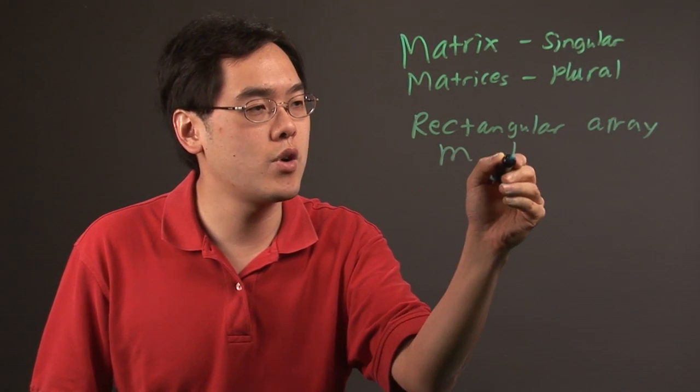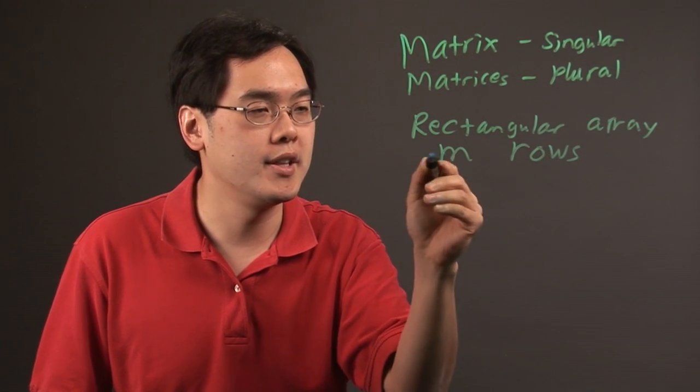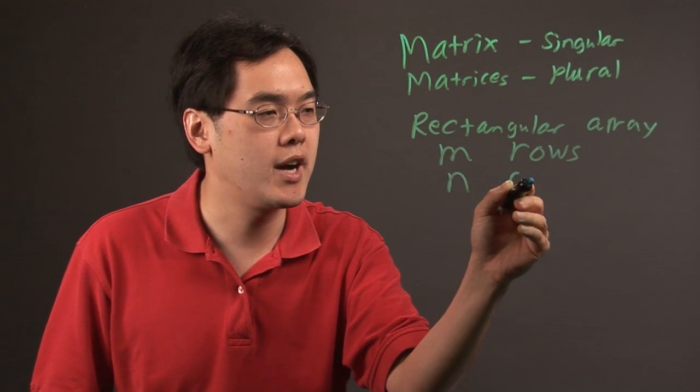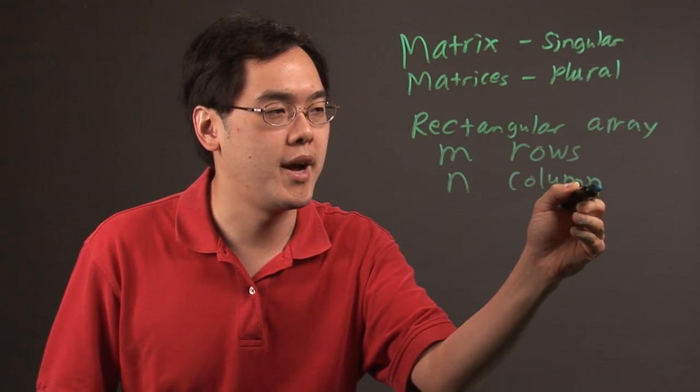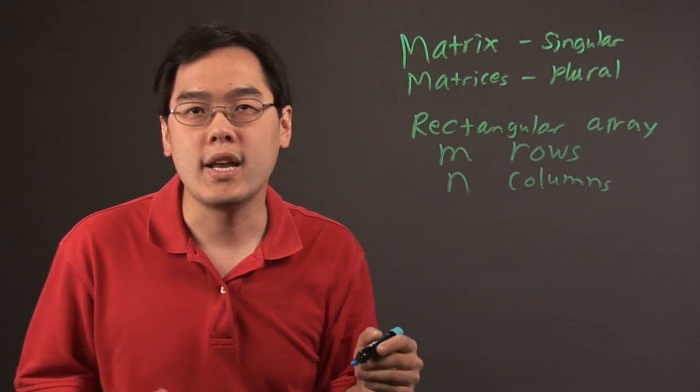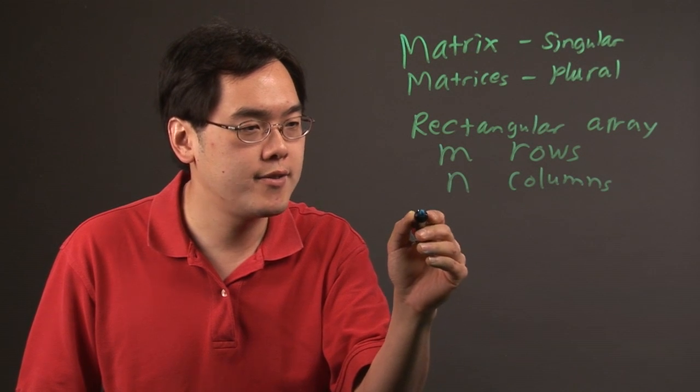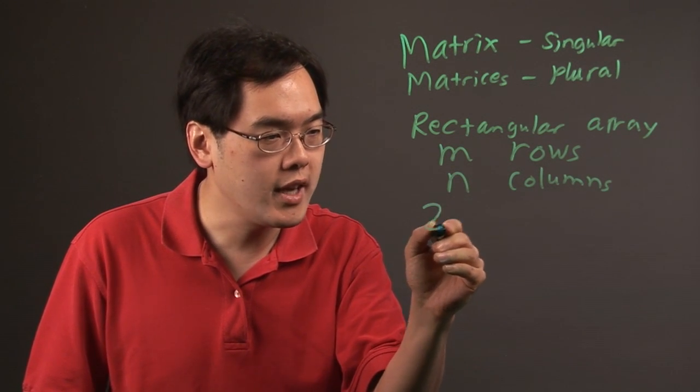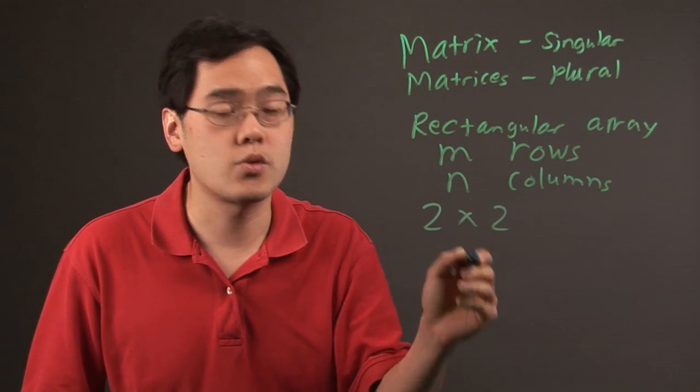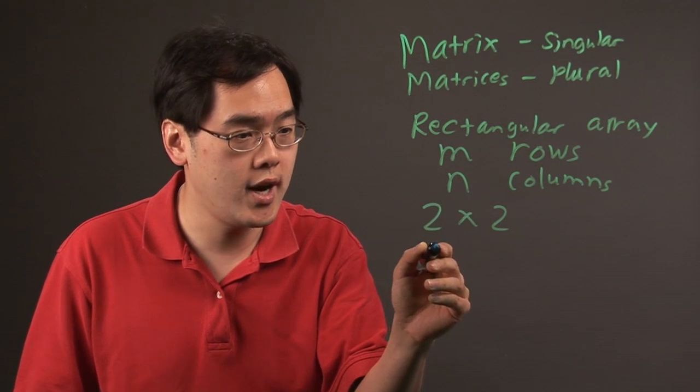And there's a certain number of rows, usually called the letter M, and there's a certain number of columns denoted by the letter N. So for example, if I have a 2x2 matrix, we're talking about two rows and two columns.